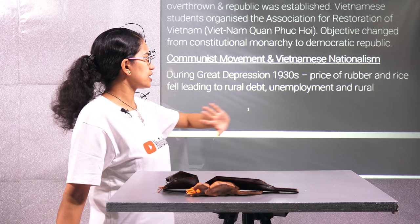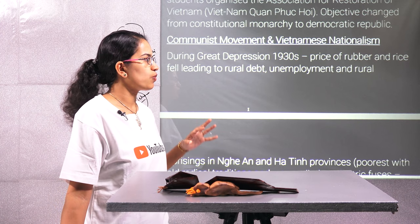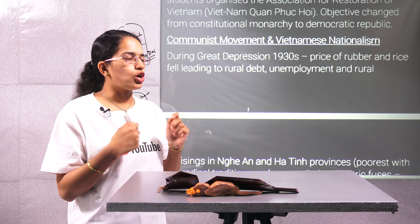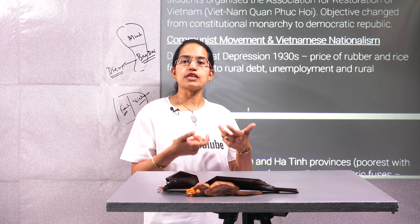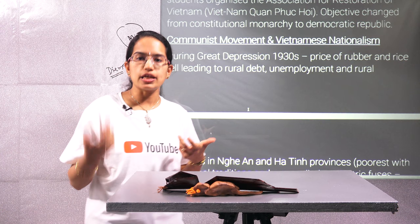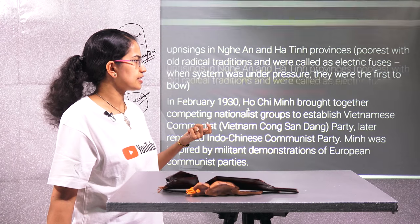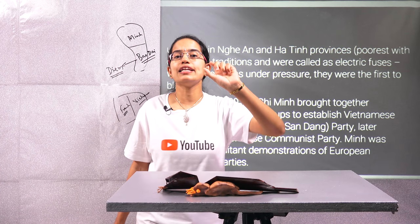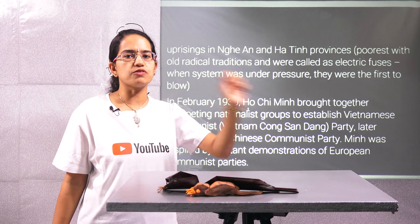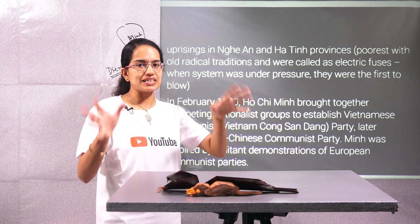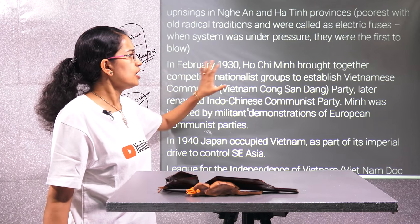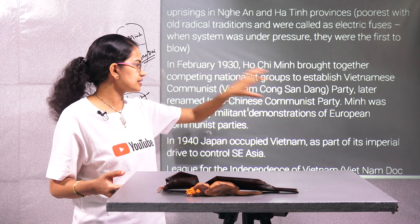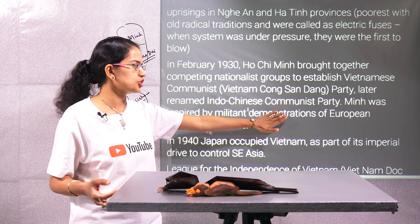The communist movement started in Vietnam following the Great Depression in 1930. Prices of agricultural goods shot up, people were facing rural debt, huge unemployment, and rural uprisings seen in two provinces — Nghe An and Ha Tinh — which were called 'electric fuses' because they were the first provinces to be affected when pressure built up in the region. Finally, Ho Chi Minh brought together nationalist groups to establish the Vietnamese Communist Party, which was later renamed as the Indochina Communist Party.